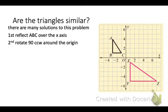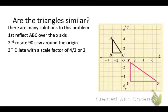Then I'm going to rotate it 90 degrees counterclockwise about the origin. And then I'm going to dilate it with a scale factor of 4/2 or 2. And then I can write my congruent statement that ABC is similar to ZYX. I did that right.